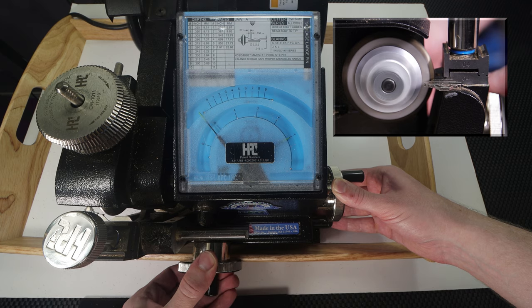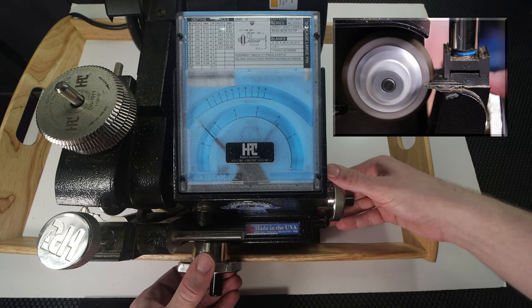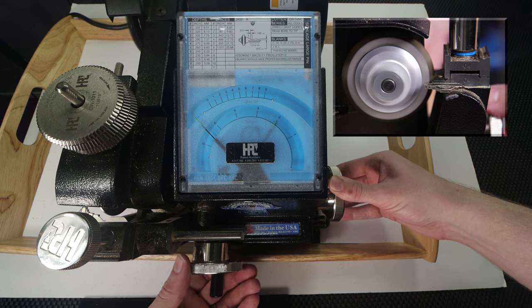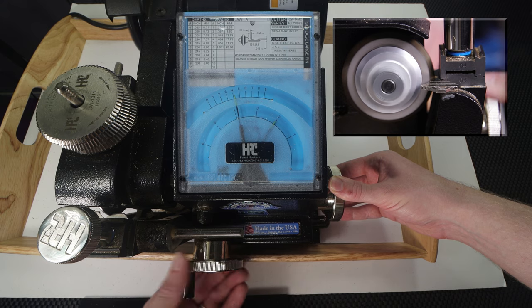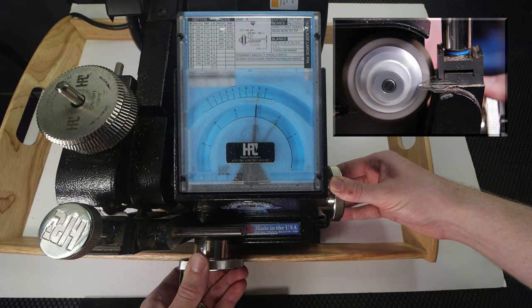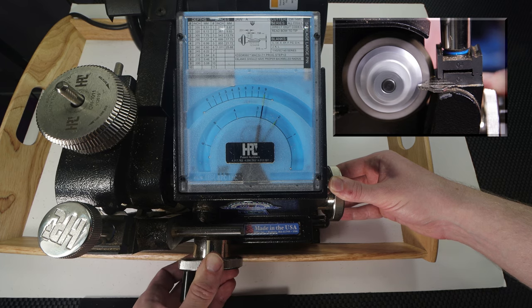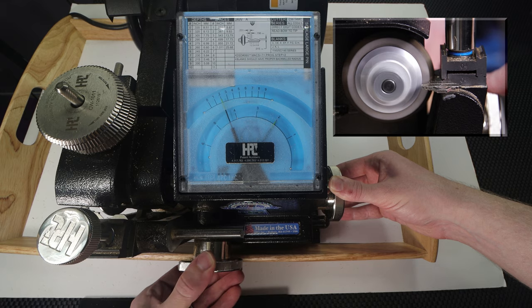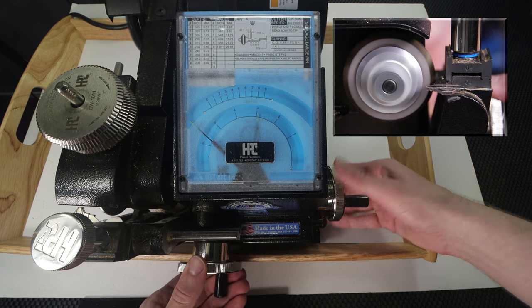Alright, so what we're doing now is we're backing off the key, we're going to move over to position 2 and then we're going to cut to 9 once again. So we're going to back off and then we're going to keep repeating until we get to all the positions on our key.